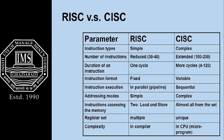Now coming to the differences on the following parameters. First, instruction type: in RISC architecture simple instruction types are used, whereas in CISC complex instruction types are used. Second, number of instructions: RISC uses reduced instructions, mainly from 30 to 40, whereas CISC uses extended instructions.